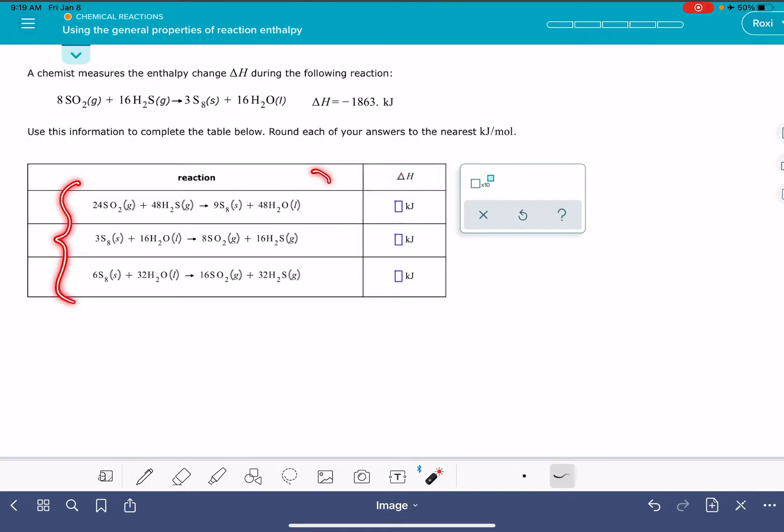All of these equations are going to be very similar to the original equation. You'll notice that they have the same reactants and the same products, although they might be in the reverse order. When you're coming up with the new value of delta H for any one of these equations, all that you need to do is compare this equation to the original. Whatever changes have been made to this equation, you'll make the same changes to the value of delta H.